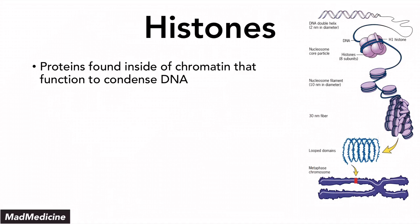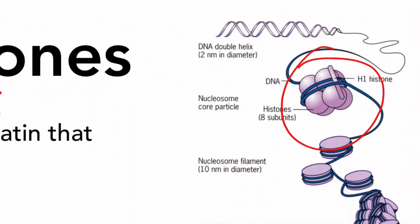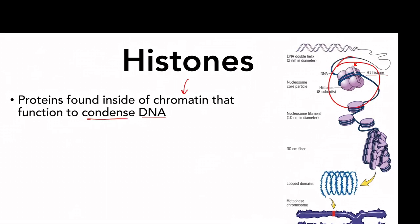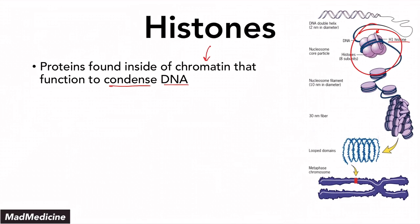Histones are proteins that essentially function to condense DNA. They're located inside of the chromatin. This right here is a structural component of what histones look like. As you can see, you have an eight-member core and one histone on the outside — the H1 histone. They function to condense DNA into the metaphase chromosome that you ultimately see, but they also function to control DNA transcription.